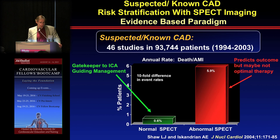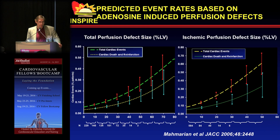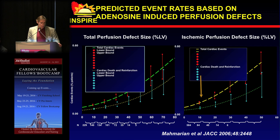An abnormal perfusion scan clearly predicts outcome. The larger the perfusion defect, the more it matters — it's not just a yes or no answer. As the size of the perfusion defect increases, both total events and cardiac death and MI increase exponentially. There seems to be an inflection point around 10 to 15% of the myocardium where events ramp up significantly when you have an ischemic defect size over about 10 to 15%.